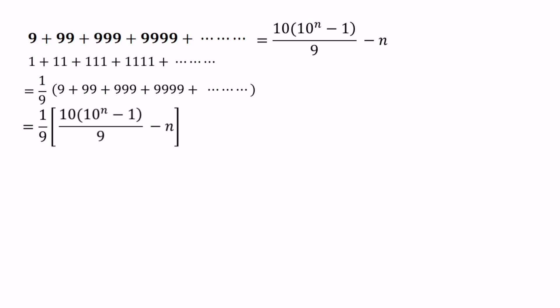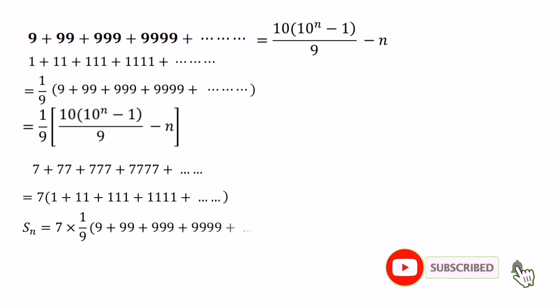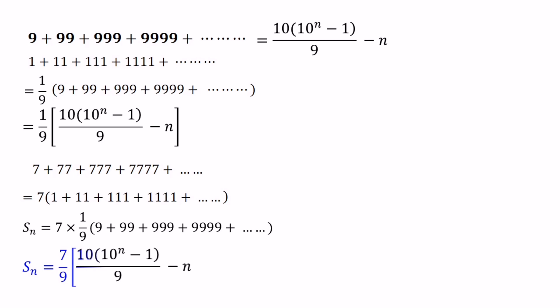Finally, let's imagine you need to find the value of 7 plus 77 plus 777 and so on. In this case, we can take 7 as a common factor. Then we have 7 times (1 plus 11 plus 111 plus 1111 and so on). We know that 1 plus 11 plus 111 and so on can be simplified as 1 over 9 times (9 plus 99 plus 999 plus 9999 and so on). So the final answer becomes 7 over 9 times [10 times (10 to the power of n minus 1) over 9 minus n].